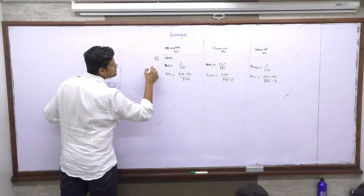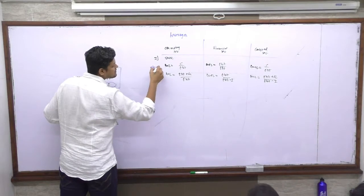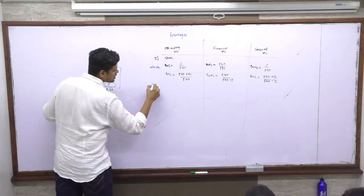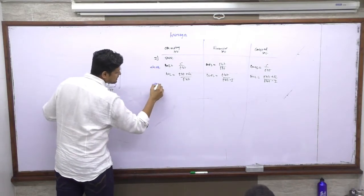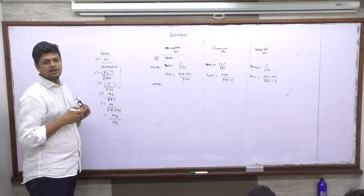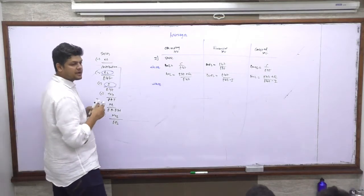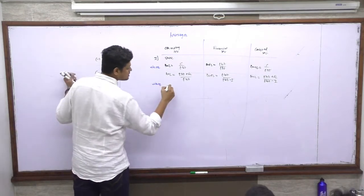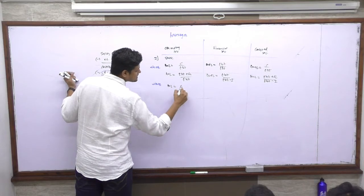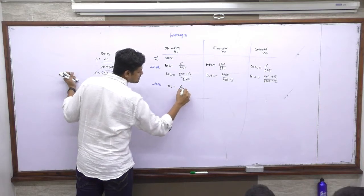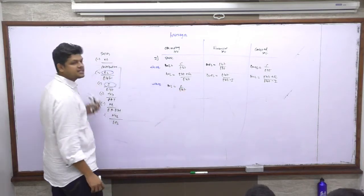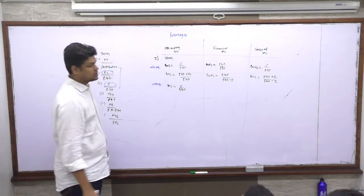The previous calculation was without preference dividend. Now, if there is preference dividend, will there be any impact on degree of operating leverage? The degree of operating leverage will be the same, but there will be a change with respect to degree of financial leverage.